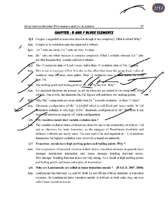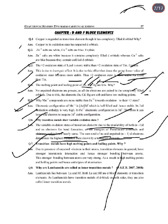Next: Why do transition metals show variable oxidation states? Variable oxidation states of transition metals are due to the availability of both (n−1)d and ns electrons for bond formation. Since the energies of the (n−1)d orbitals and ns orbitals are nearly the same, the sum total of ns and (n−1)d unpaired electrons determines the highest oxidation state.